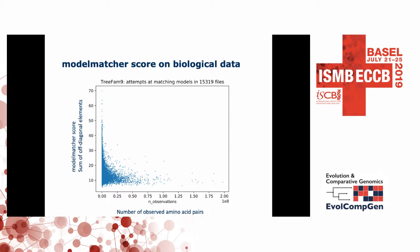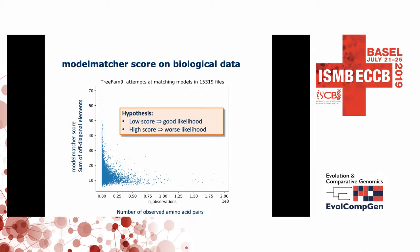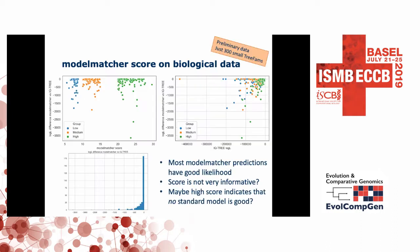This gives the hypothesis that a low score should indicate a good model choice with good likelihood, whereas a high score might give a worse likelihood. I haven't had the computational resources to do a thorough investigation, but I selected three times 100 cases of low, medium, and high Model Matcher scores to see what happens.